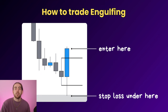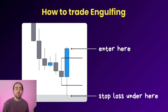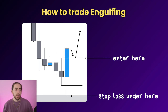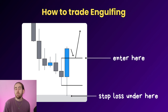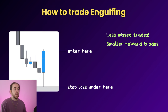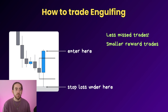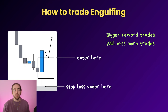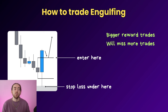To trade engulfing patterns, once we've seen a bullish engulfing from an area of interest we have two options. First, enter on the close of the engulfing candle with a stop loss under the low — the most simple and direct approach, you'll miss fewer trades but get smaller reward. The second option is to wait for a pullback to the engulfed candle and enter from there with the same stop loss — a more refined entry giving bigger reward on the trades you catch, but you will miss more trades because sometimes that pullback won't happen.